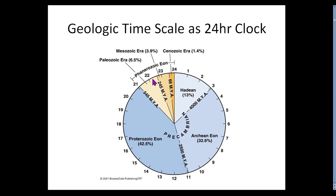Geologic time is incredible, and life is right here at the end. Life didn't even get complex until you get near the Devonian time around 360 million years ago, when fish began to really diversify and you get your first plants and animals trying to get on land. The takeaway is that complex life occupies a small part of Earth history.